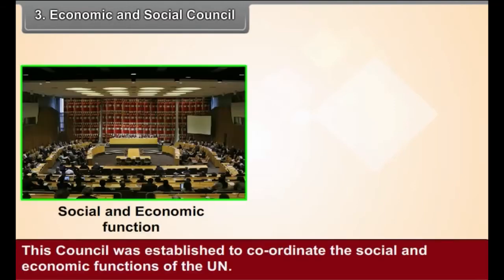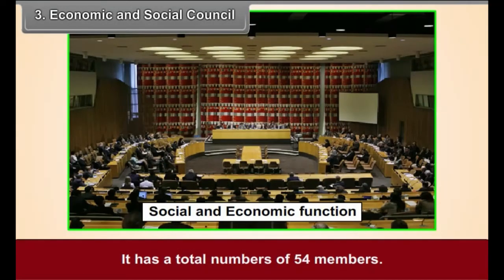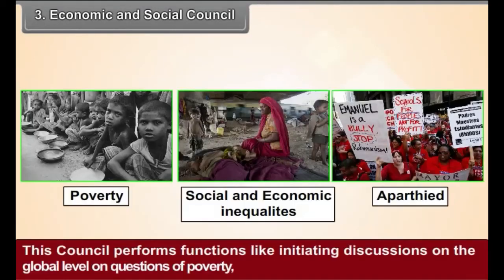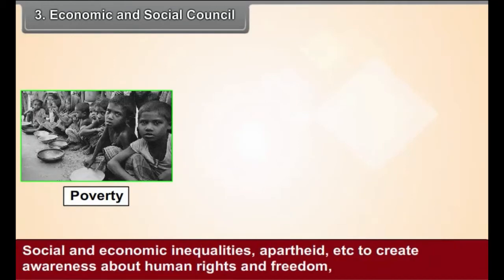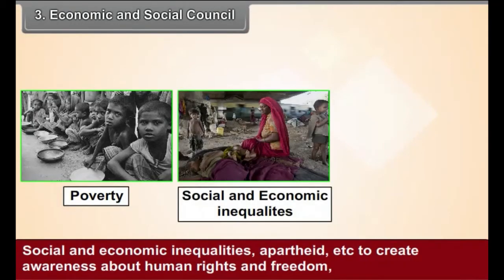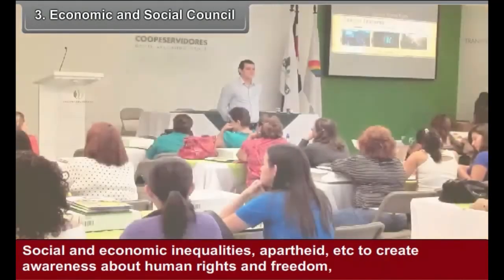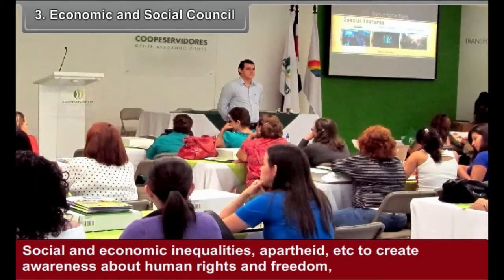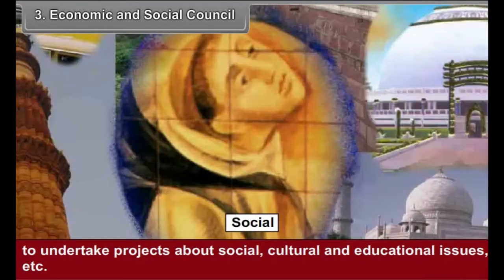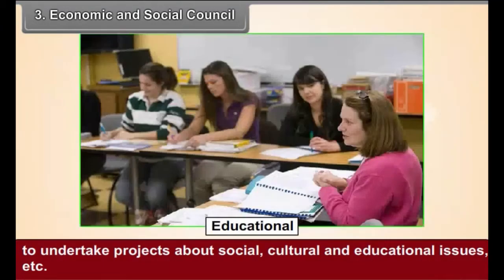Economic and Social Council — Structure: This Council was established to coordinate the social and economic functions of the UN. It has a total of 54 members. Functions: This Council initiates discussions on global questions of poverty, social and economic inequalities, and apartheid. It also works to create awareness about human rights and freedom, and undertakes projects on social, cultural, and educational issues.